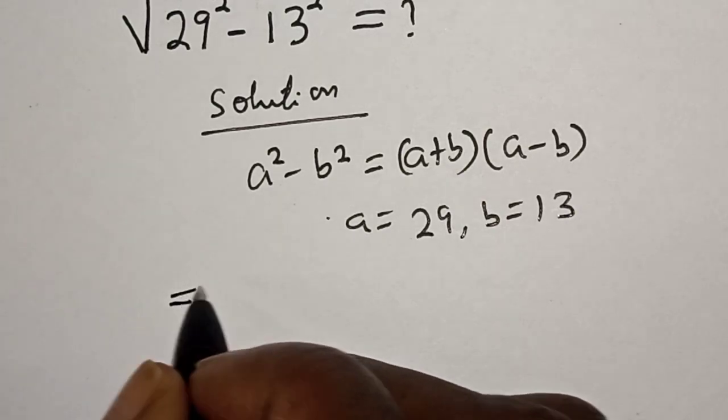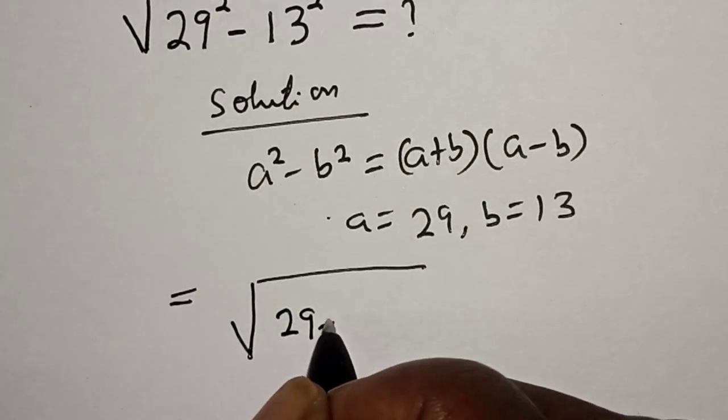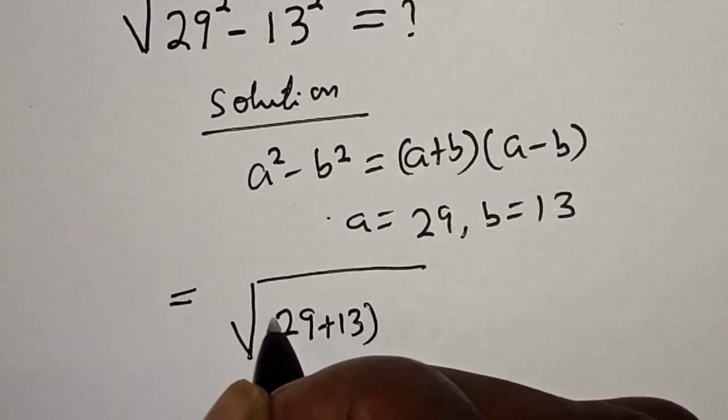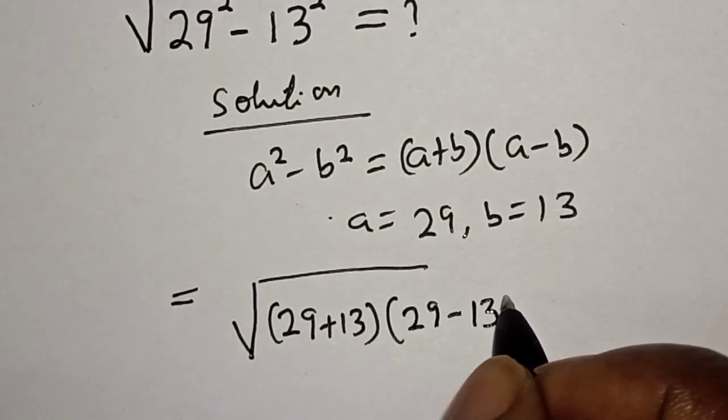Then this is square root of 29 plus 13 multiplied by 29 minus 13.